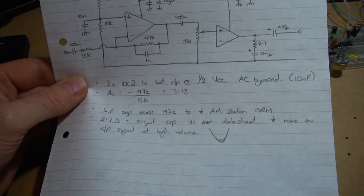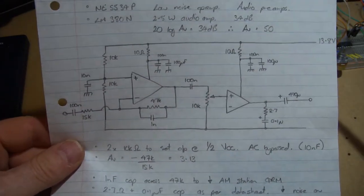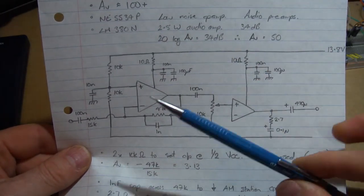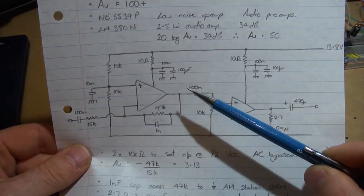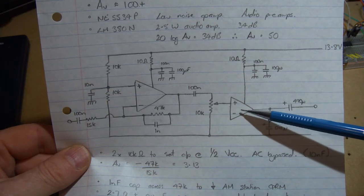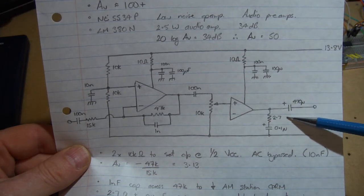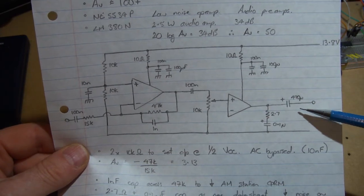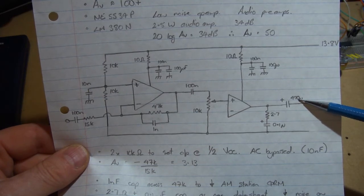For coupling capacitors, just keep things simple, let's use 100 nanofarads around the place, apart from the output of the LM380N. Per the spec sheet, a good sized electrolytic there, so using a 470.